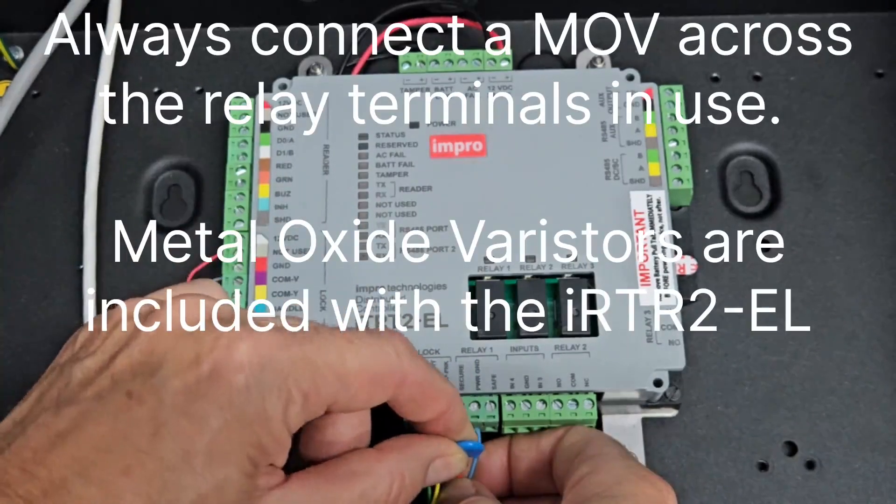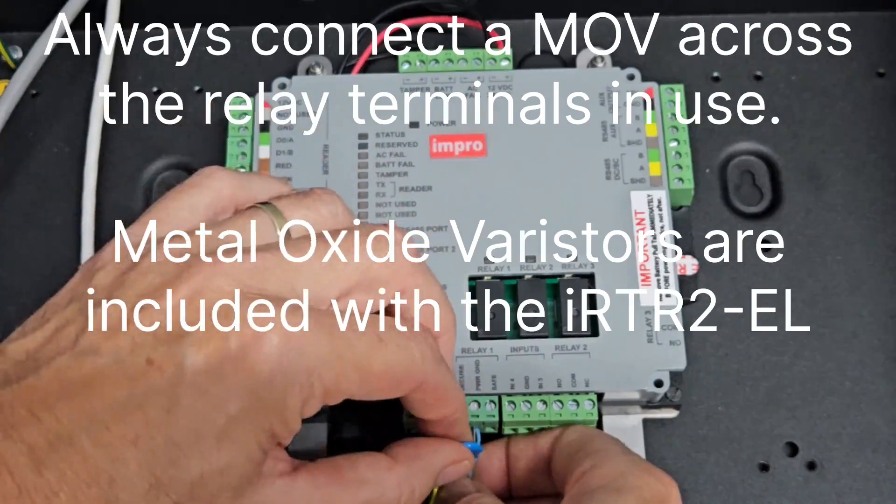It's advisable to put a MOV between these two terminals to protect the relay.